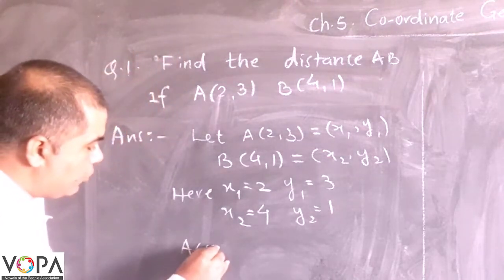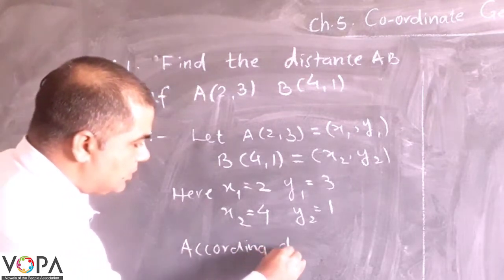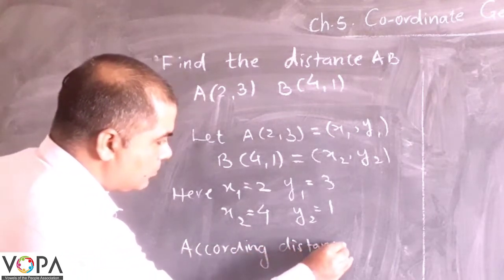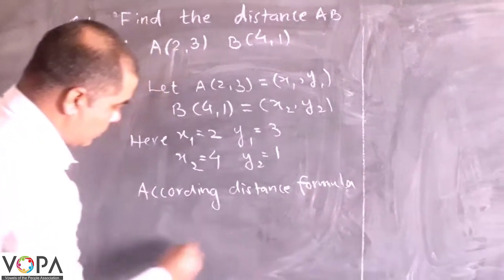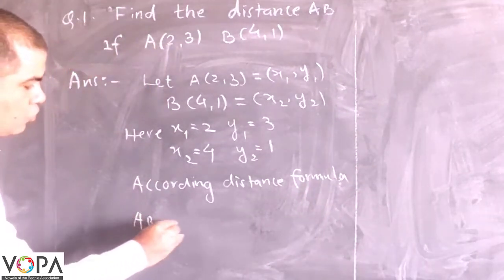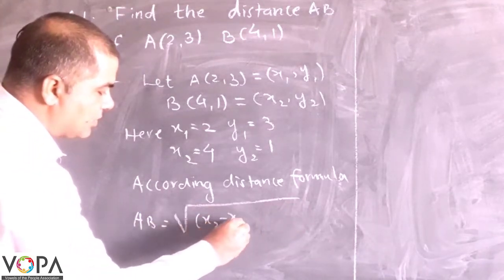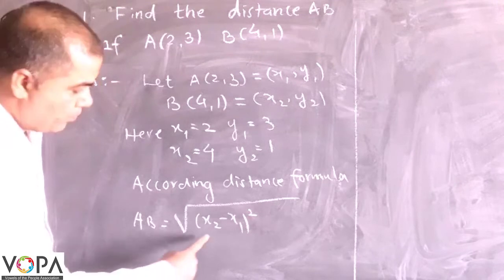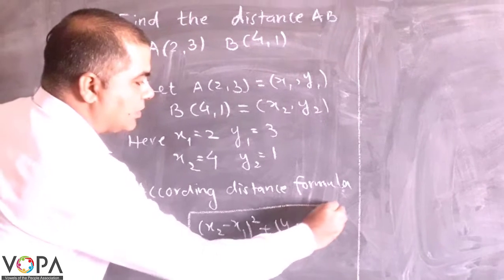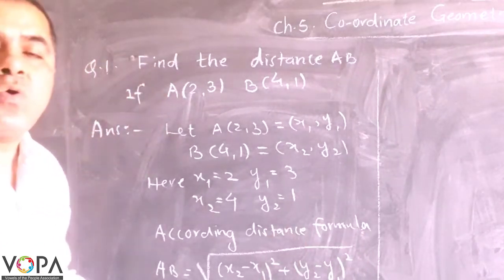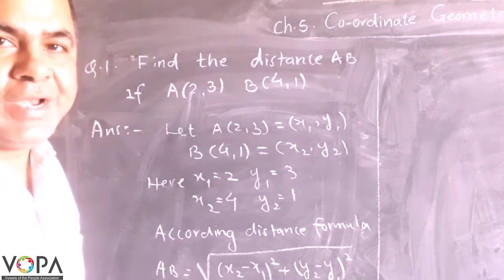According to distance formula, AB equals to square root of (x2 minus x1) squared plus (y2 minus y1) squared. Now substitute the values of coordinates.